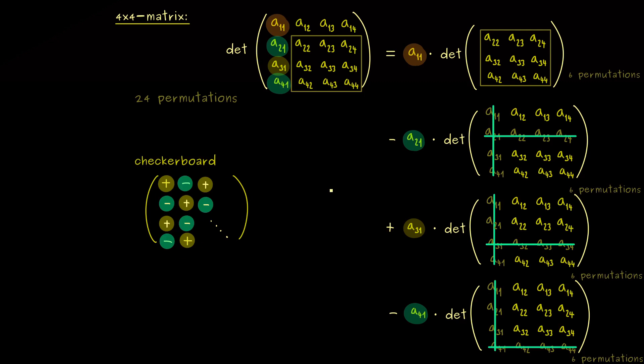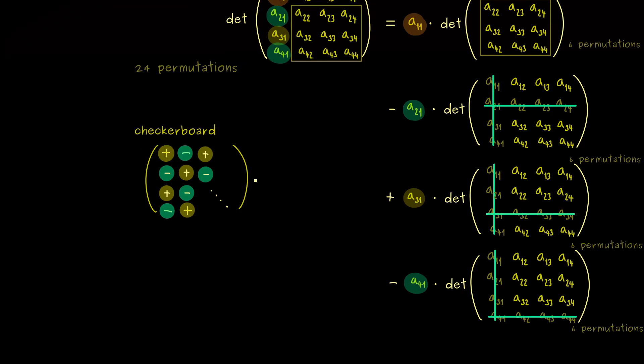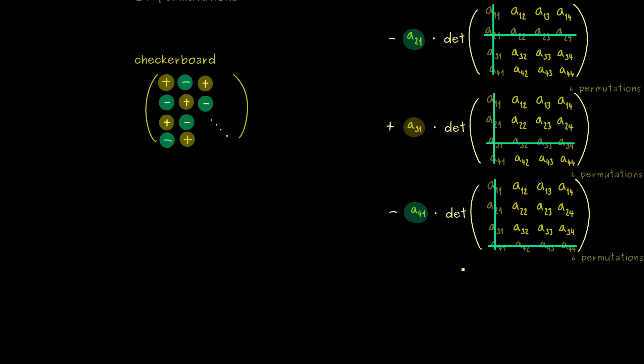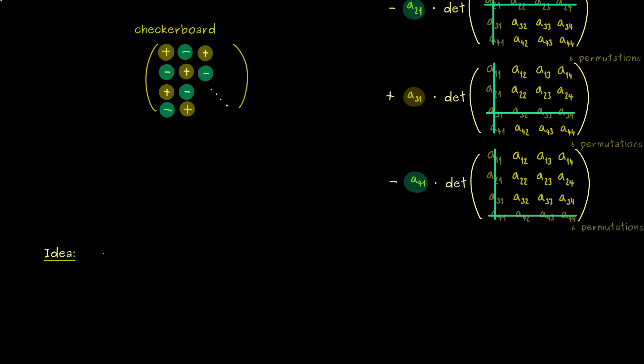Okay, then I would say, let's write down what this whole thing here means for the general n×n case. Indeed, you should see here, the overall idea is to reduce the size of the matrix step by step. This means, if we start with an n×n matrix, we can apply this procedure here to get an (n-1)×(n-1) matrix. Or to say it more precisely, we get n of these smaller matrices.